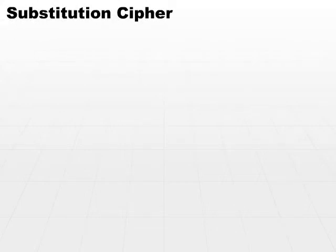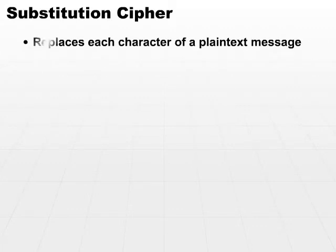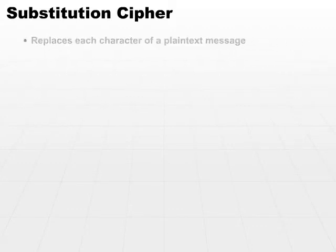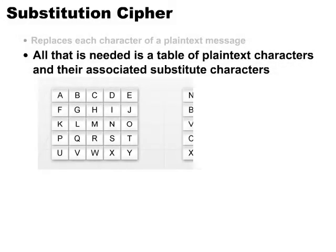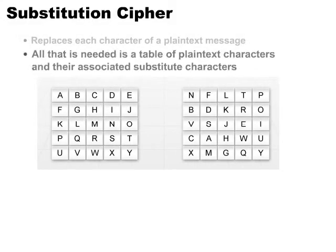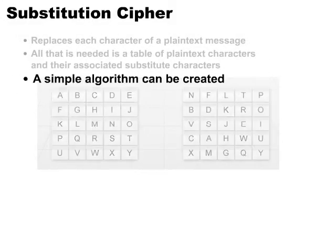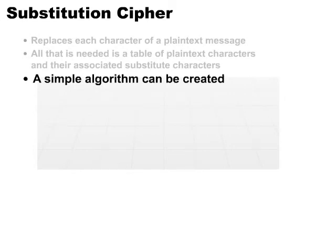Another type of cipher that's very common is the substitution cipher. The substitution cipher replaces each character of a plain text message with something else. All that you need to use a substitution cipher is a table of plain text characters and their associated substitute characters, or you could create a simple algorithm to do the job.